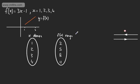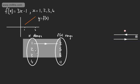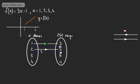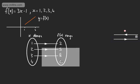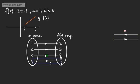If I take 1: 3 lots of 1 minus 1 is 2; 3 lots of 2 minus 1 is 5; 3 lots of 3 minus 1 is 8; and 3 lots of 4 minus 1 is 11. So our arrows go: 1 maps to 2, 2 maps to 5, 3 maps to 8, 4 maps to 11. That's a nice straightforward one-to-one function.